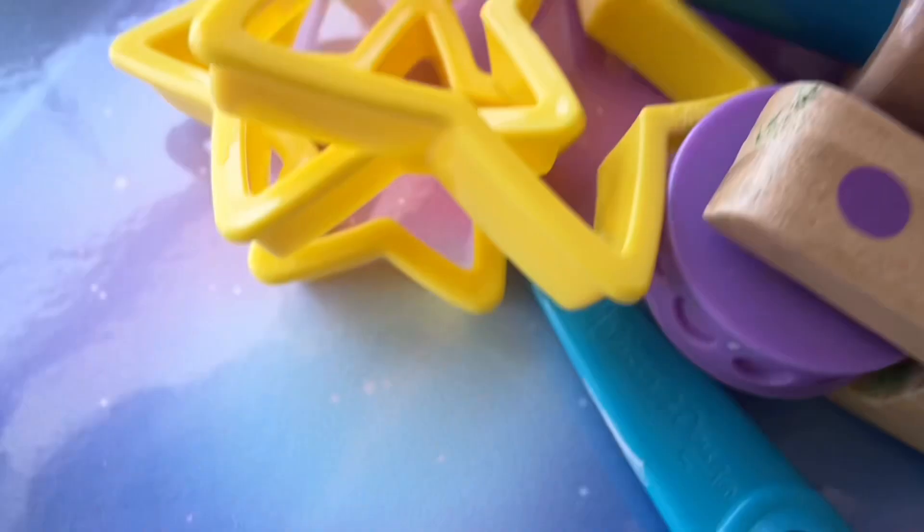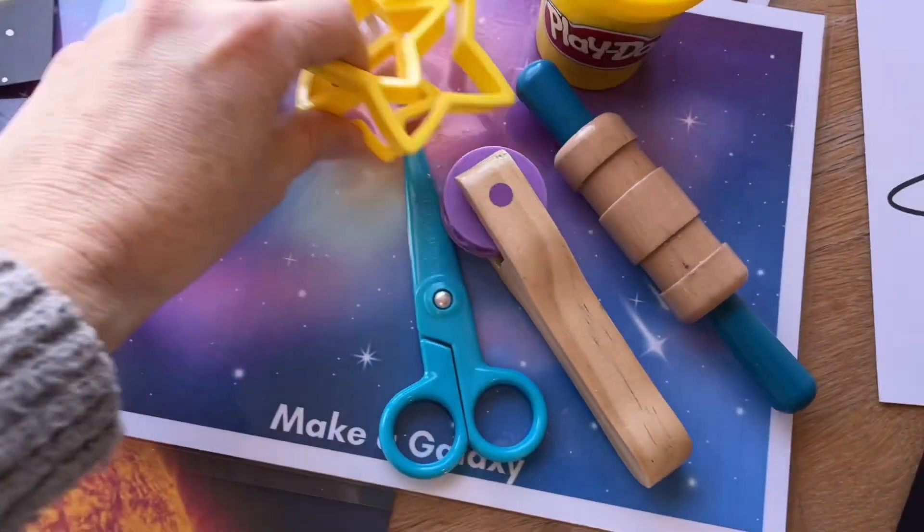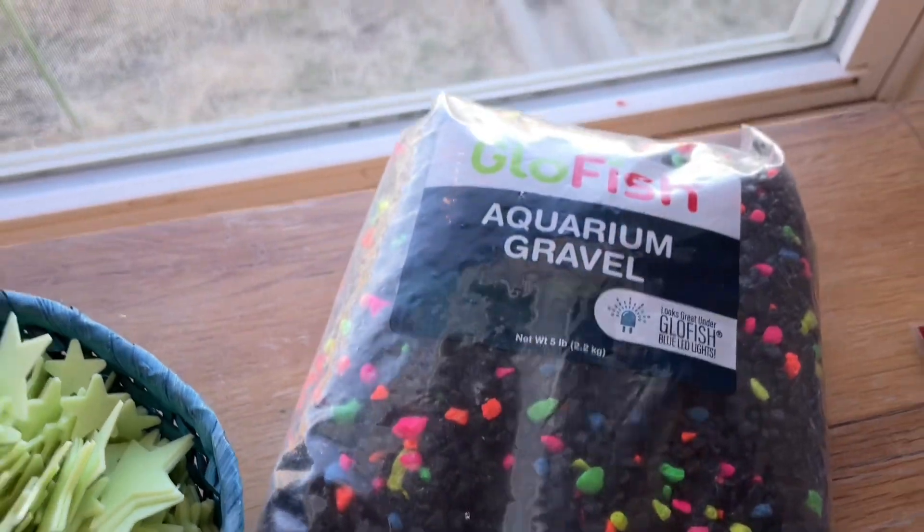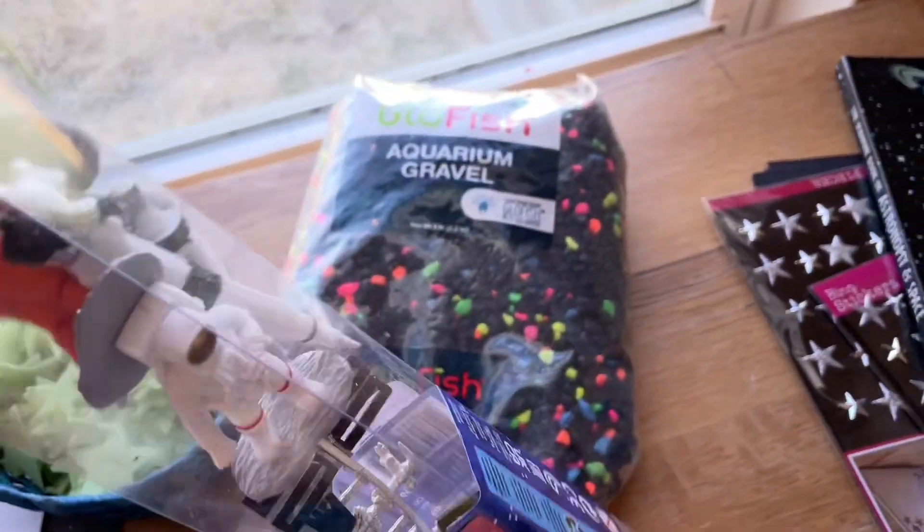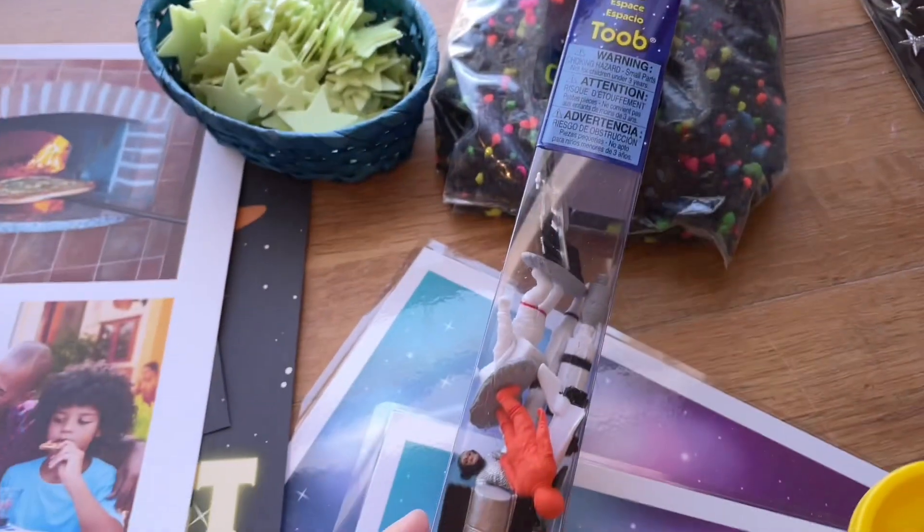In the play-doh area I have some play-doh mats, some star cookie cutters and some yellow play-doh. In my sensory bin I have these little glow-in-the-dark stars, this black aquarium gravel, and then this space tube from Safari Ltd. I'm just going to put all that in the bin with some scoops and I think they'll have a lot of fun with it.